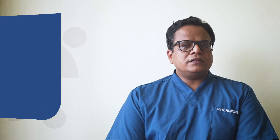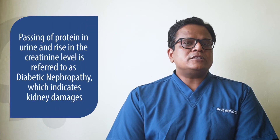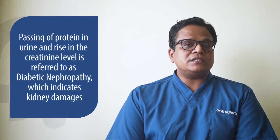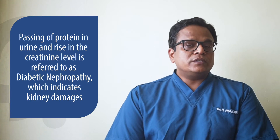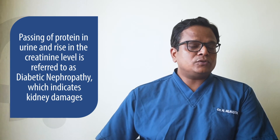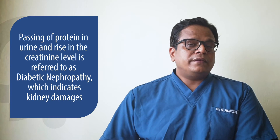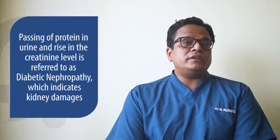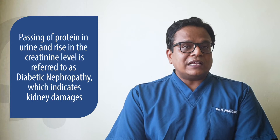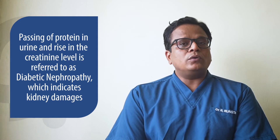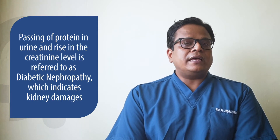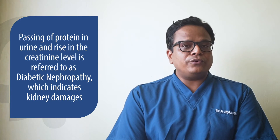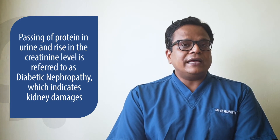Diabetic nephropathy is defined as passing of protein in urine as well as an increase in the serum creatinine level, signifying that there has been damage to the kidney because of diabetes. There can be other causes of proteinuria which need to be ruled out even in patients of diabetes. Classically, by definition, to be labeled as diabetic nephropathy you should have proteinuria in the urine and a high creatinine level, along with the causative factor of diabetes.